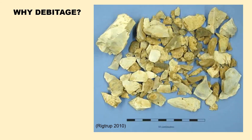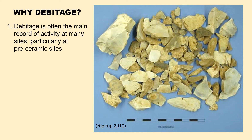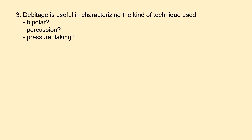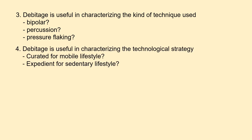Why examine Debitage? It's often the main record of activity at many sites, particularly at pre-ceramic sites. In flintknapping, only 9% of stone raw material may become the finished product, and 91% is likely to become Debitage. Thus, Debitage may be the most abundant kind of artifact at a site. It's useful for characterizing the kind of technique used — bipolar percussion, percussion flaking, pressure flaking — and for characterizing the technological strategy of a society: curated for a mobile lifestyle, or expedient tools for a sedentary lifestyle.